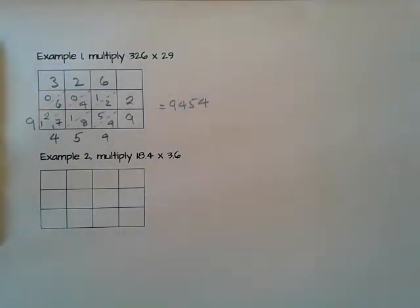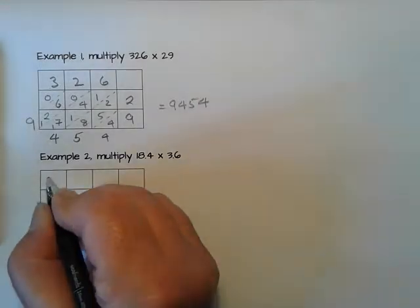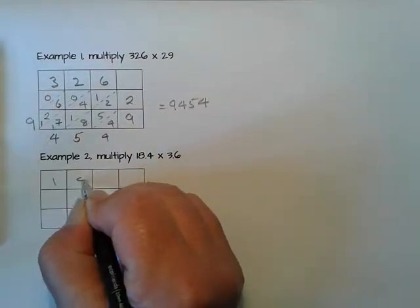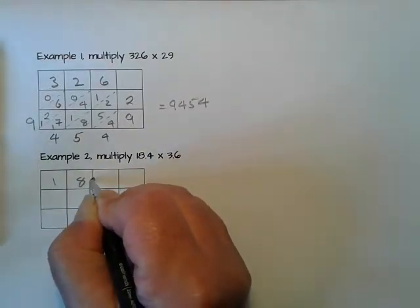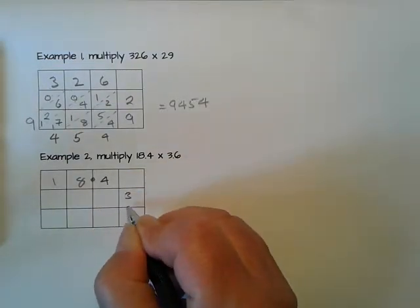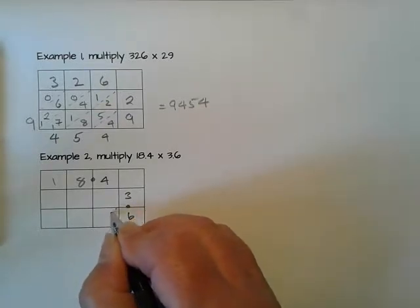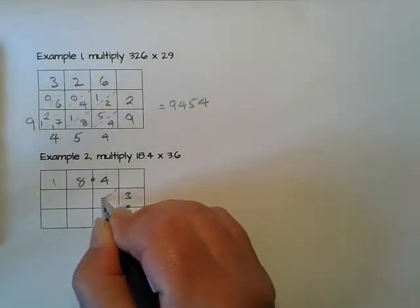If you want to check that using a calculator, you'll find it's right. Now, the other advantage is that it puts the decimal point in the right place automatically. Let's look at this: 18.4 multiplied by 3.6. I put in the diagonals again.